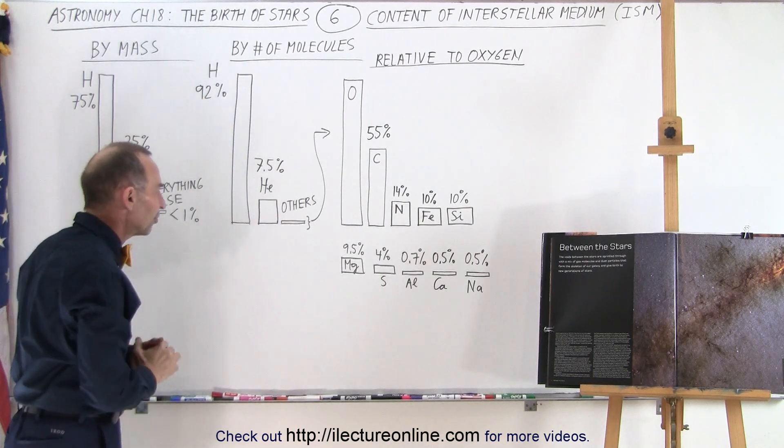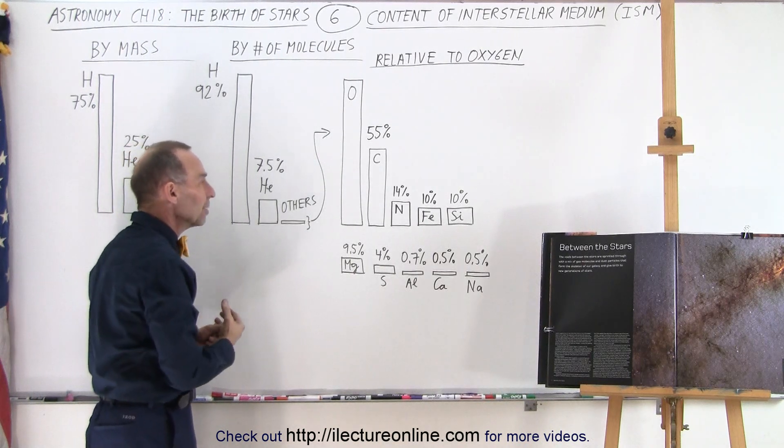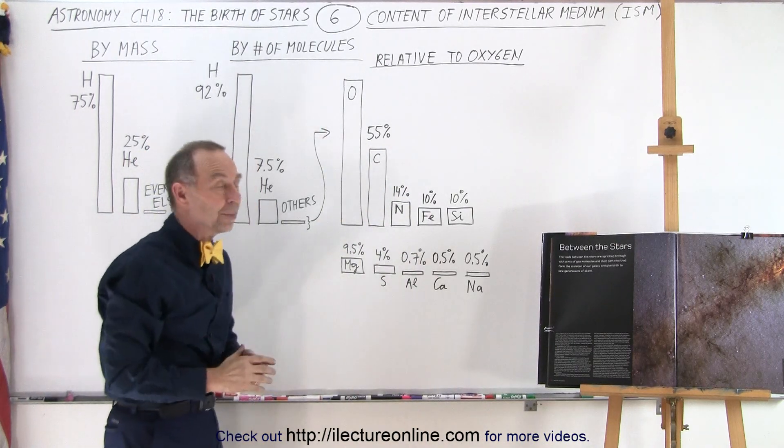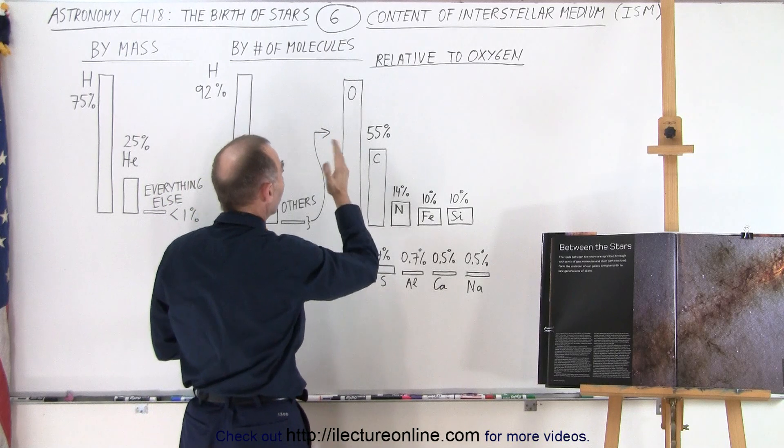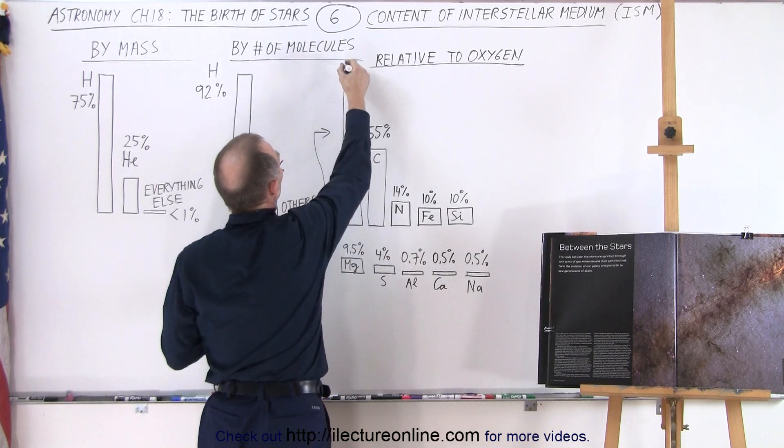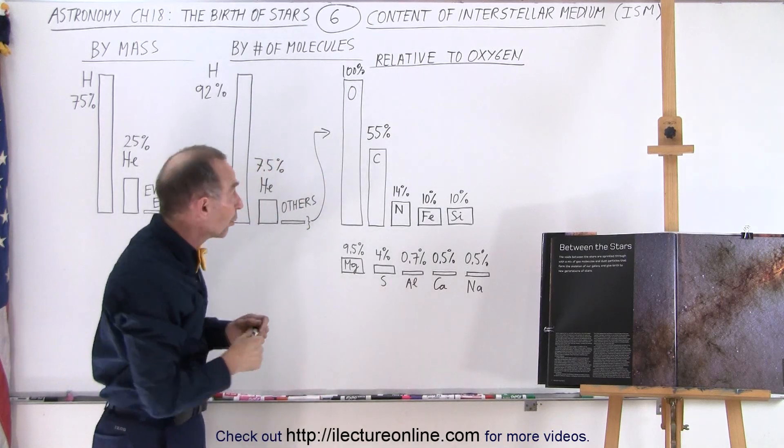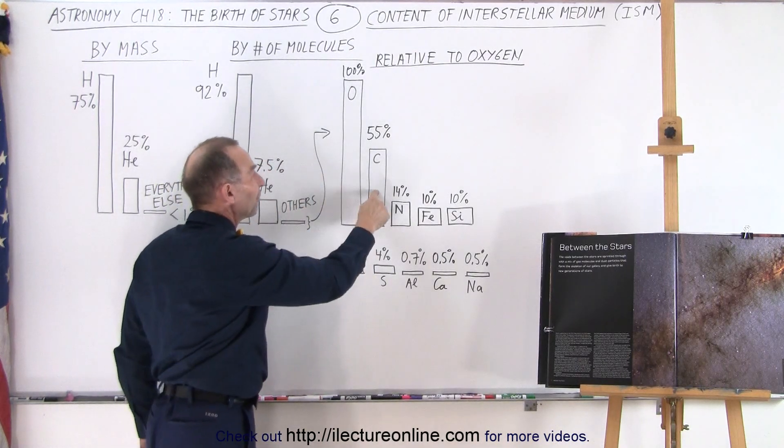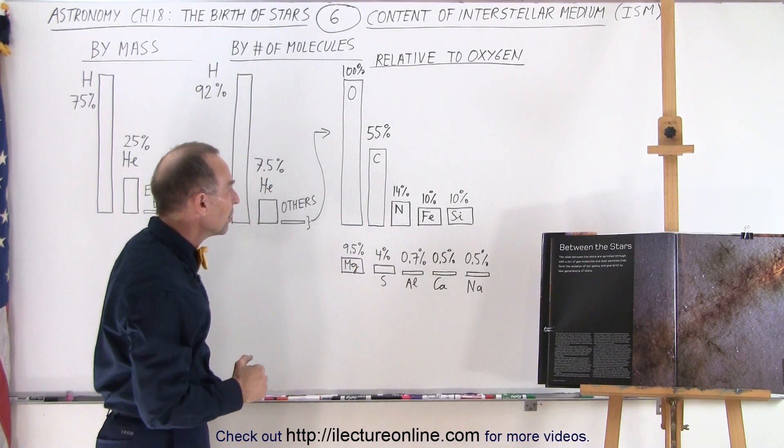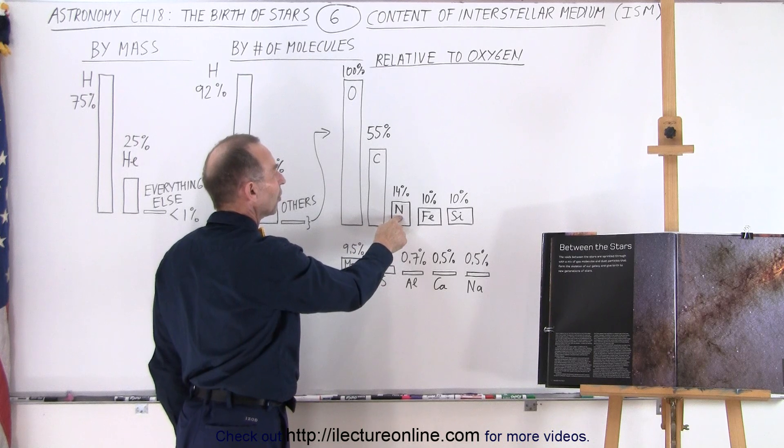Now let's take a look at all the other stuff that is inside the interstellar medium. Of all the other 10 elements, besides hydrogen and helium, oxygen is the most prominent. And so let's say that oxygen is 100%. We're going to compare the abundance of all the other elements just to oxygen. So if we call oxygen 100%, then relative to oxygen, there's about 55% carbon. In other words, for every 100 oxygen molecules, there are 55 carbon molecules. So carbon is the fourth most abundant element in the interstellar medium. After that comes nitrogen. If there's 100 molecules of oxygen, there are 14 molecules of nitrogen.